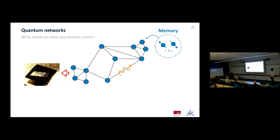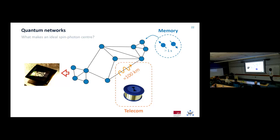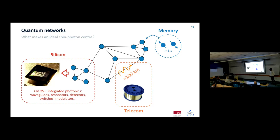To build a network like this, you need a quantum system with a good quantum memory that can hold its quantum state for a long time, and you need an optical interface — and particularly one that operates at a telecom communication band, so you can send photons losslessly through optical fiber. If you can't do that, you lose too many photons and don't reach the thresholds needed for fault-tolerant communication or computation. You also ideally want your system on a solid-state platform with advanced commercial and industrial fabrication capabilities.